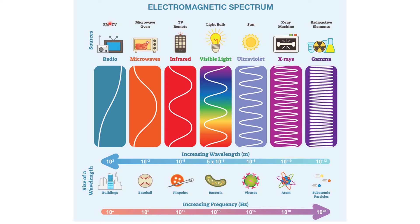FM and TV emit radio waves, microwave ovens use microwaves, TV remotes use infrared rays, light bulbs give visible light, the sun gives UV light, X-ray machines produce X-rays, and radioactive elements give off gamma rays. You don't need to memorize the exact wavelength values — you need to learn the order of these rays according to their frequencies.